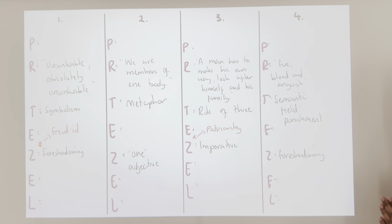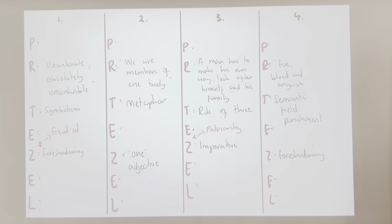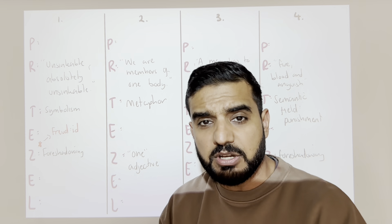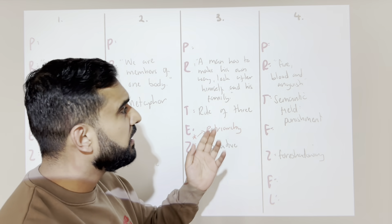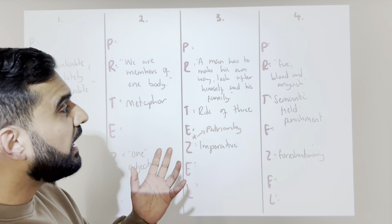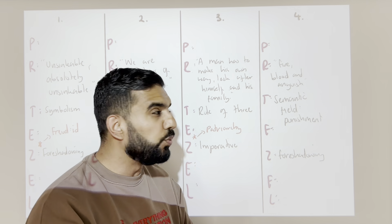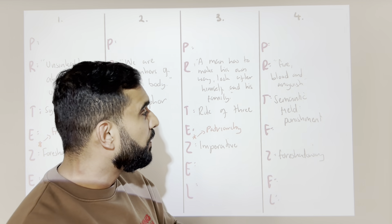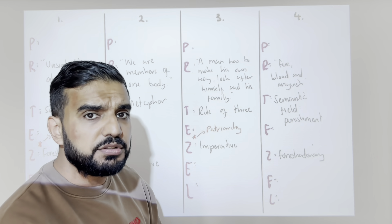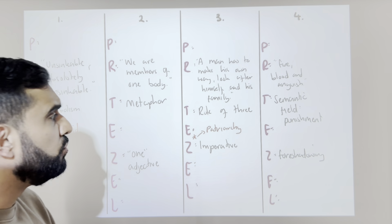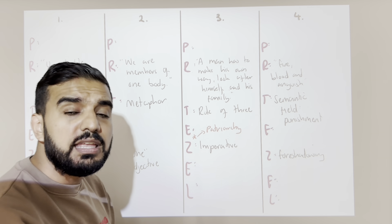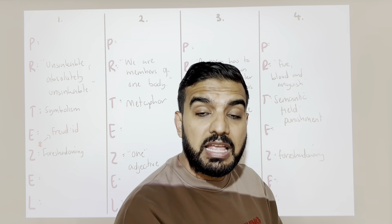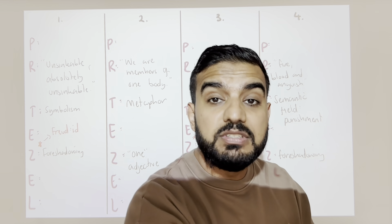Last quote — we have the famous warning by the inspector before he leaves: 'If you don't fix up, you will suffer in fire, you will suffer in blood, and you will suffer in anguish.' We have the semantic field of punishment here, and the technique is foreshadowing — it's foreshadowing the doom of these characters, that they will need to change, otherwise they are in trouble.